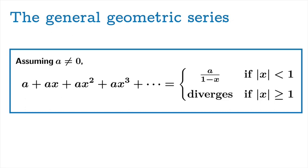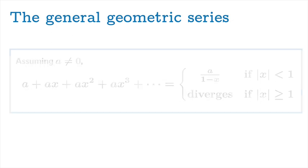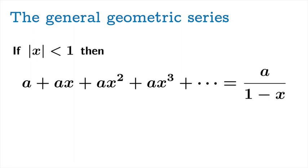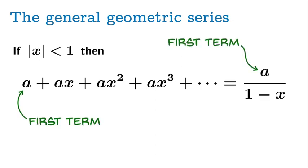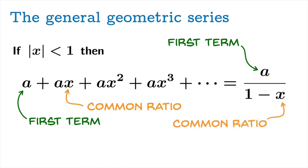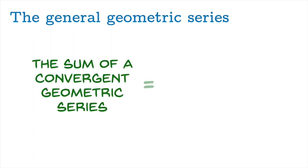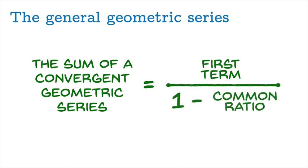So there it is in its full glory — the formula for the general geometric series. We can state it in a more positive way: if the absolute value of x is less than 1, then this series converges to a over 1 minus x. The first term shows up prominently in the formula, as does the common ratio. So we have a nice bumper sticker version of this formula: the sum of a convergent geometric series is equal to the first term divided by 1 minus the common ratio.